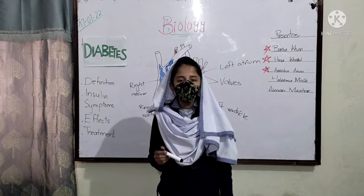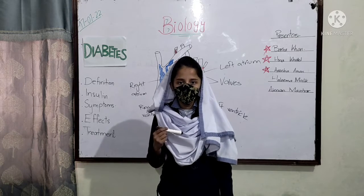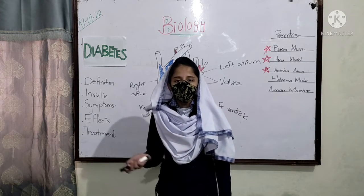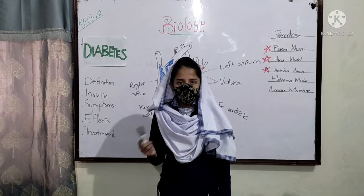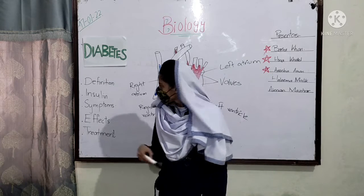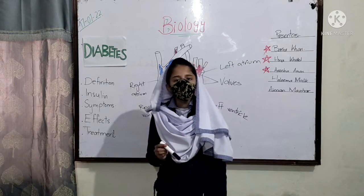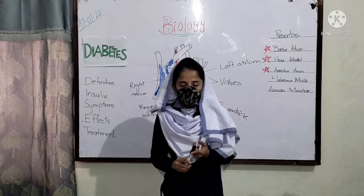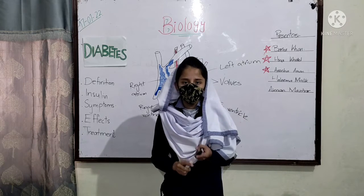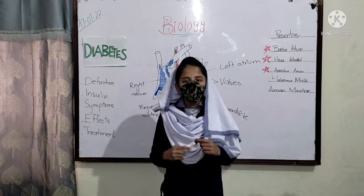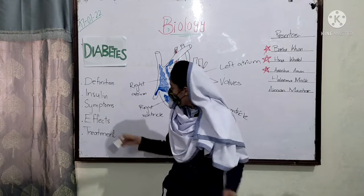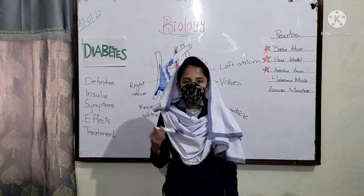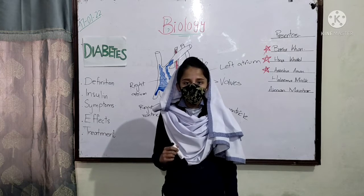Insulin helps to decrease the blood sugar in our body. Without insulin, a person develops diabetes. The symptoms of diabetes are frequent urination, excessive thirst and hunger, and loss of weight.